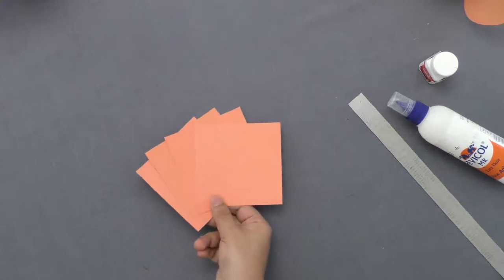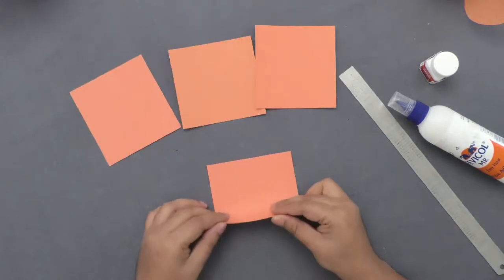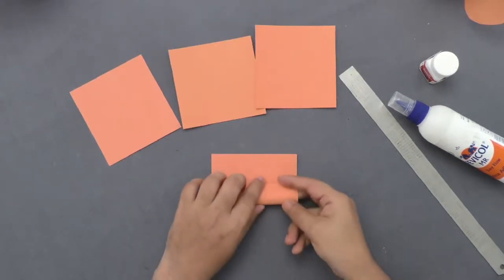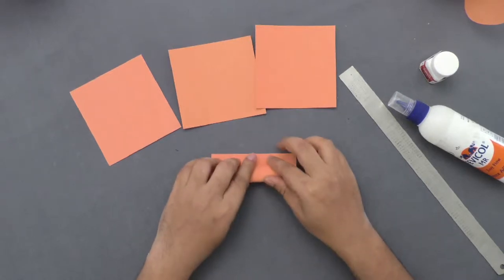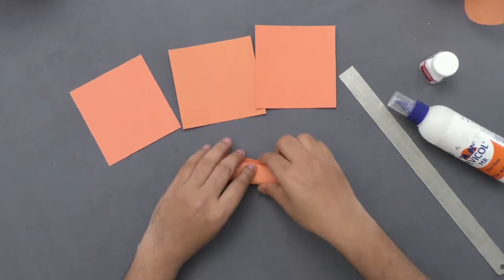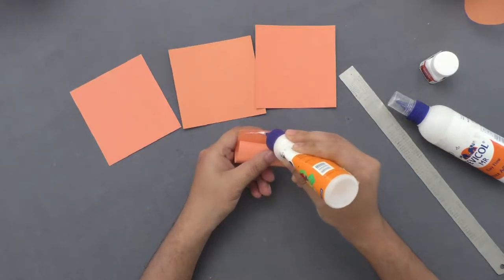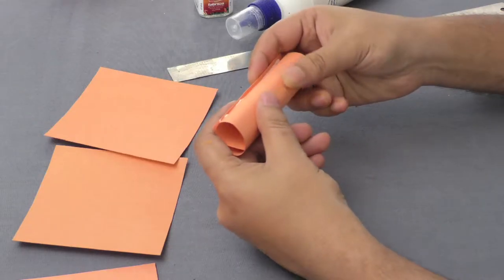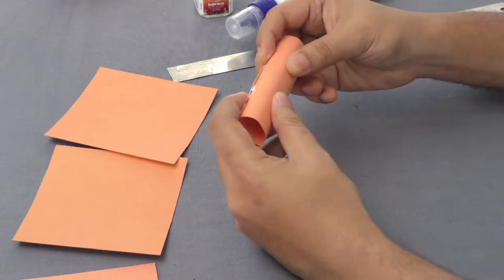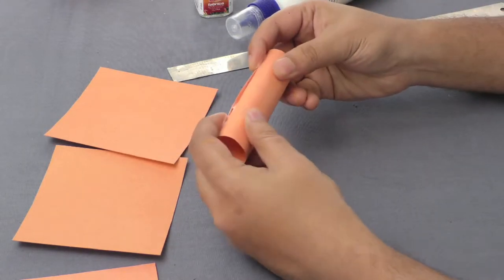First, take a chart paper and roll it into four cylinders of equal sizes. Now apply some adhesive on their edges and paste cylinders together to make two cylindrical pairs.